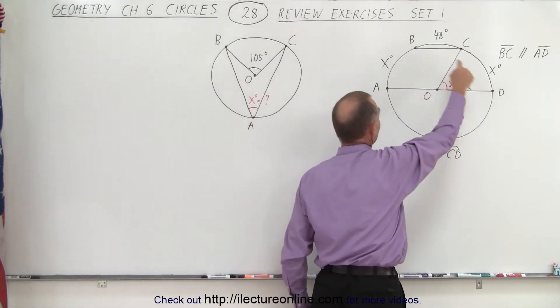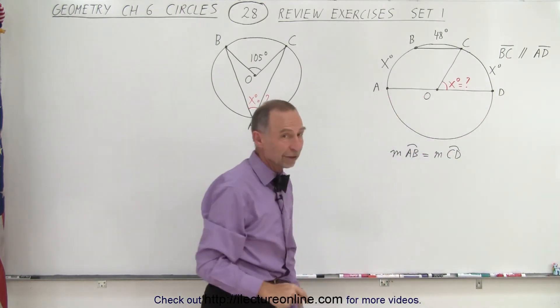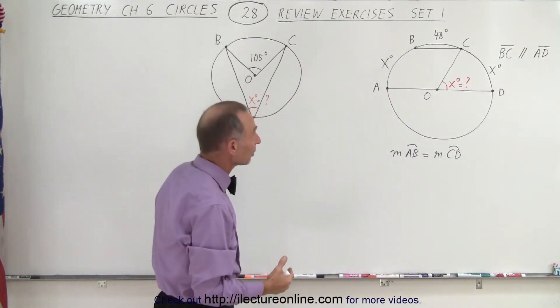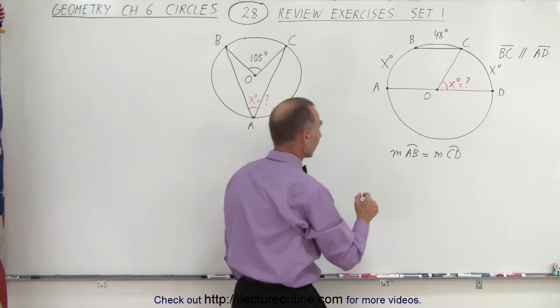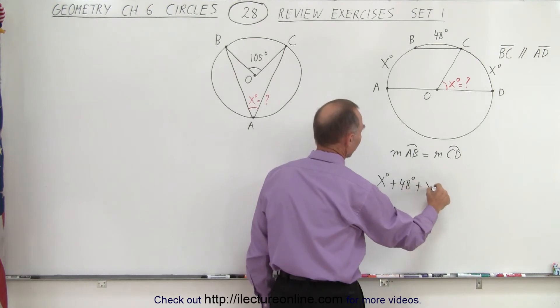And of course we know that the top half right here from A to B to C to D, that is a semicircle, therefore it subtends an angle of 180 degrees. So we can then say that X degrees plus 48 degrees plus X degrees is equal to 180 degrees.